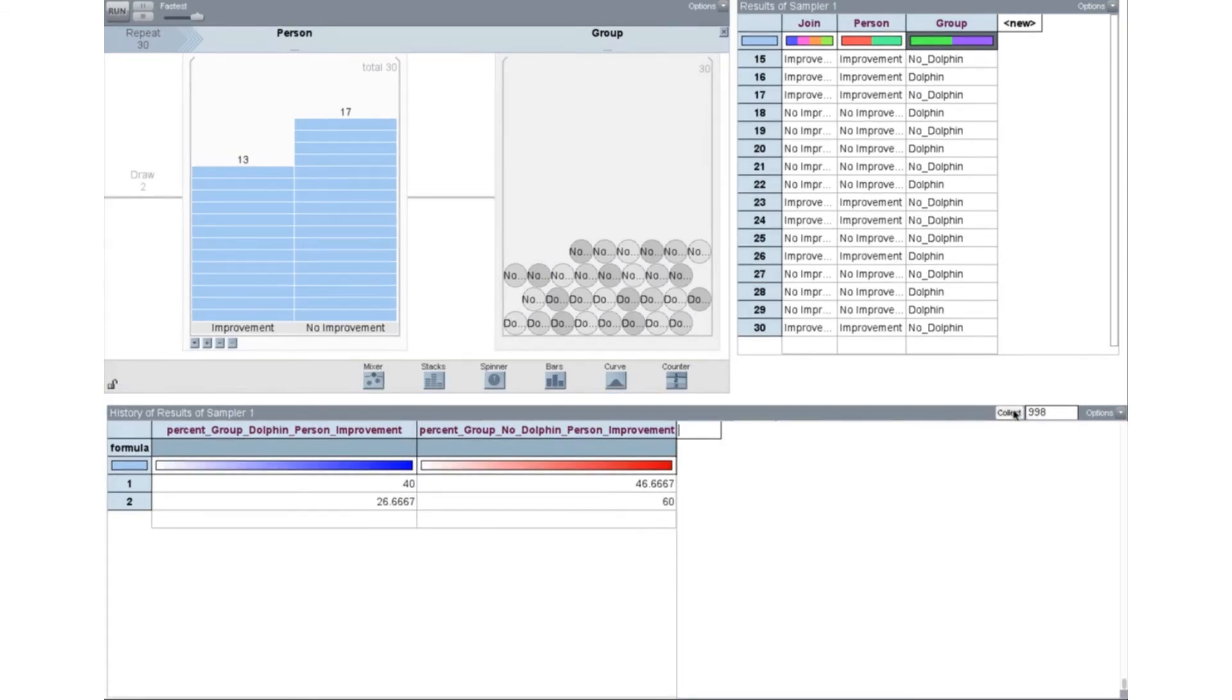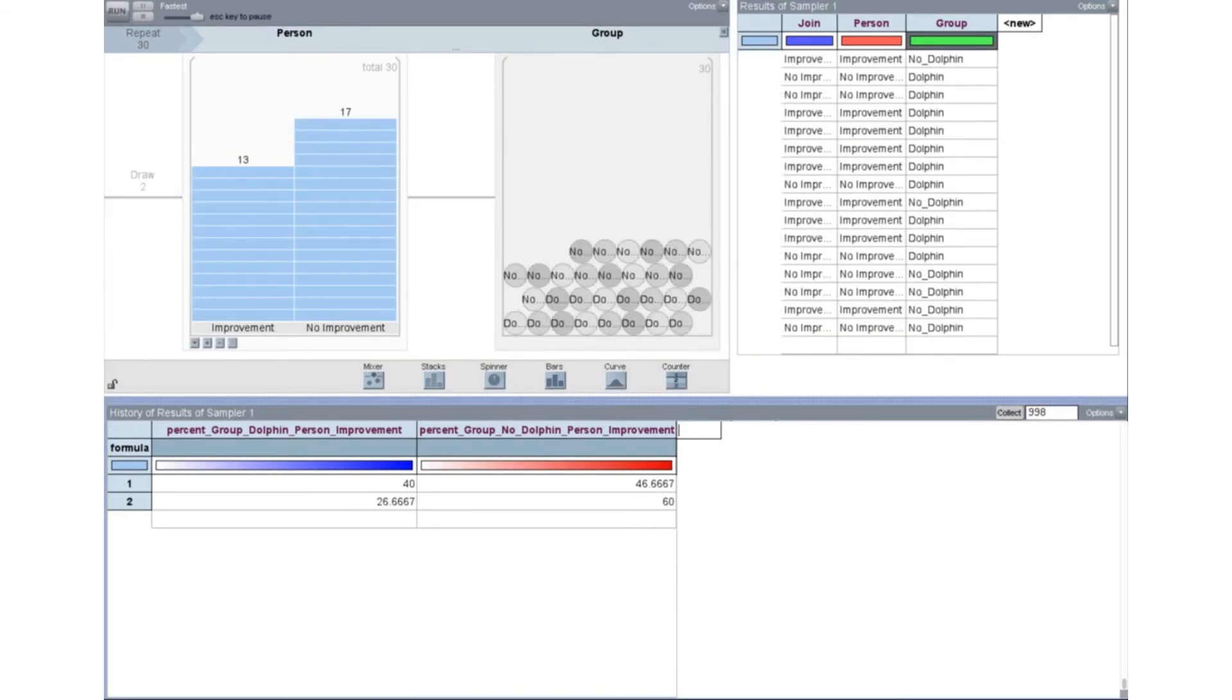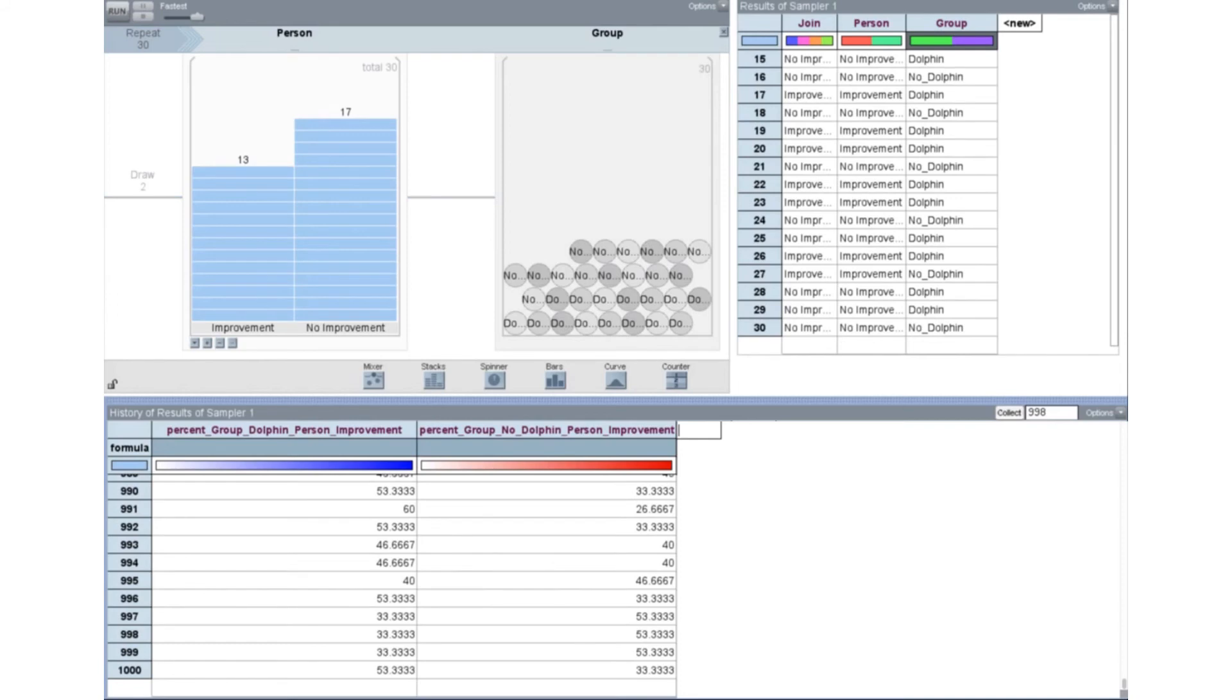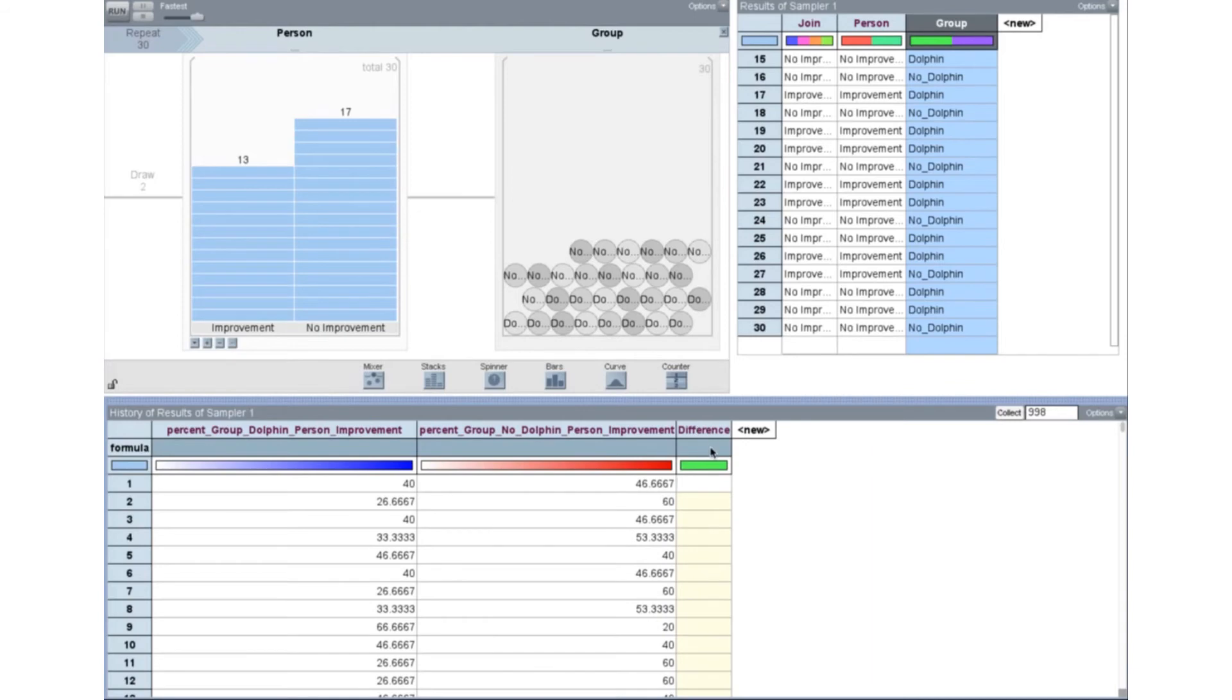So we can repeat this. Here we'll do a total of 1000 repetitions of this random assignment. And then we'll compute the difference in percentages for each of these 1000 random assignments.